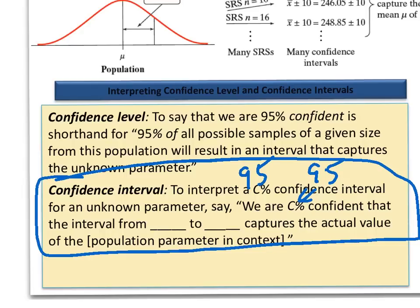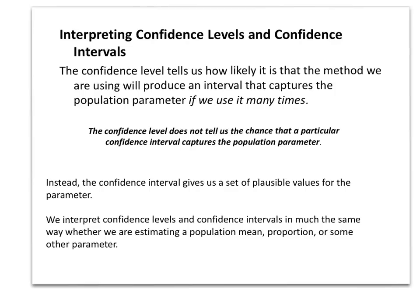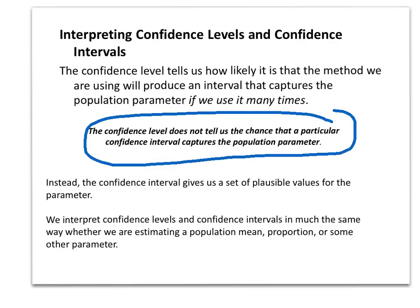You have to say that we are X percent confident that the interval will be between our two values and we will capture it that percentage of the time. So once again, the confidence level tells us how likely our method is to work. It does not tell us the chance that a particular confidence interval actually captures it.